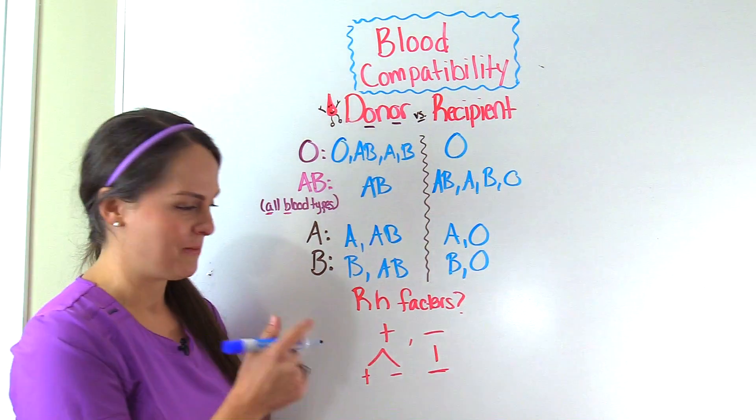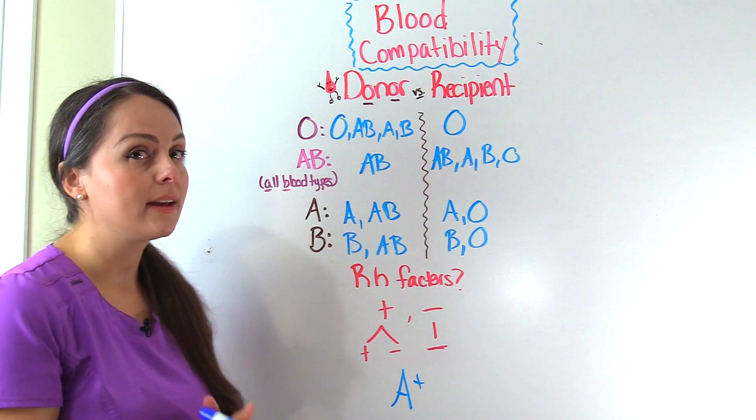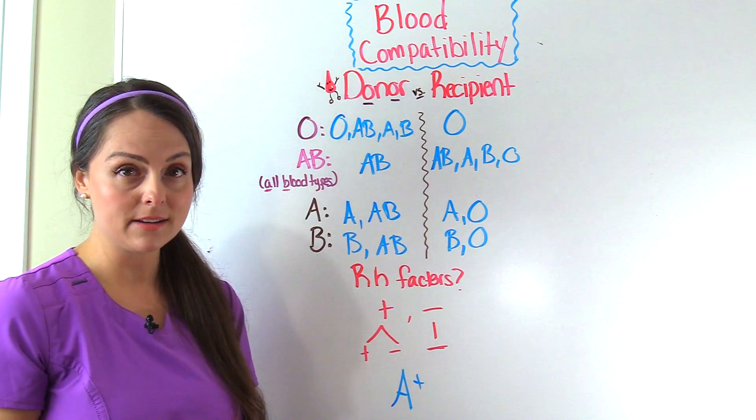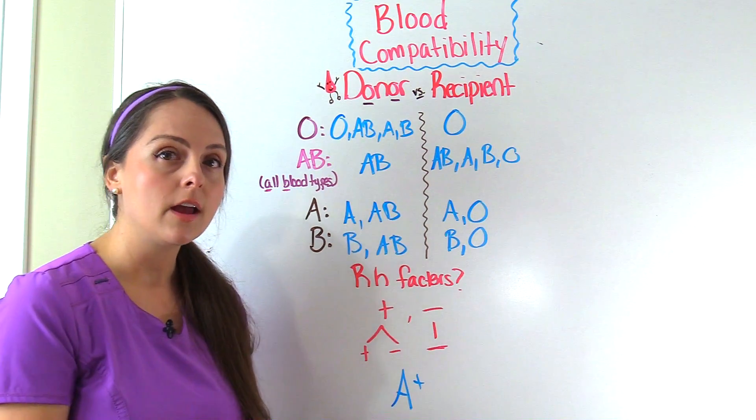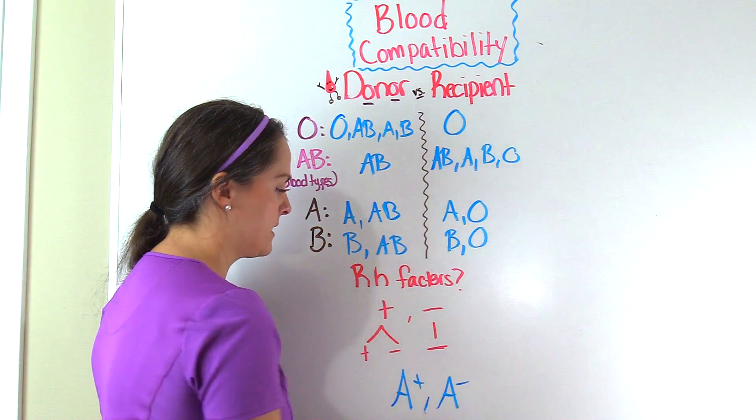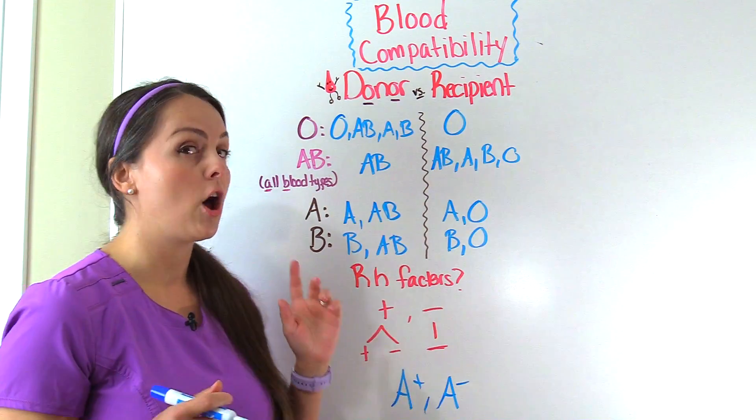Let me quiz you. If we have a patient who is A positive, what blood can they receive? They can receive A positive, A negative, O positive, and O negative. However, if the patient is A negative, they can only receive A negative and O negative.